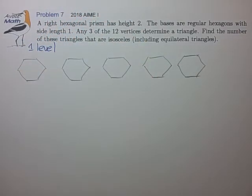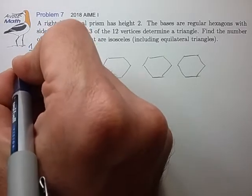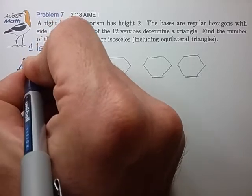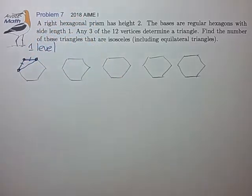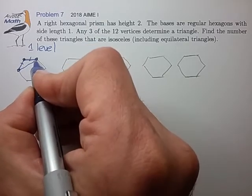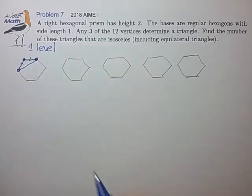And the simplest I can think of is to choose three adjacent vertices to form our isosceles triangle. But we notice that we can spin this pattern to six equivalent positions on any of the two faces, and we can place the three vertices on either of the two faces.